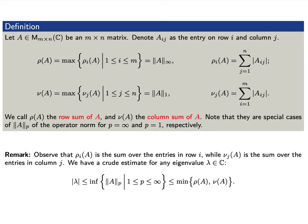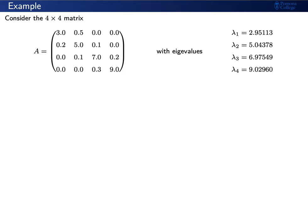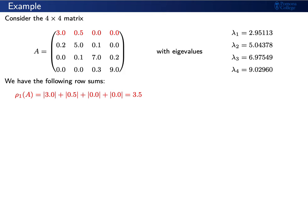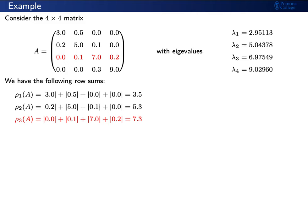Let's give an example. Consider the 4 by 4 matrix from earlier — this is the same matrix that began today's lecture. We know from the characteristic polynomial that the eigenvalues are roughly 3, 5, 7, and 9. We compute the following row sums: rho 1 is the sum over the first row, rho 2 over the second, rho 3 over the third, and rho 4 over the fourth. We find that rho of A, the maximum row sum, is 9.3.